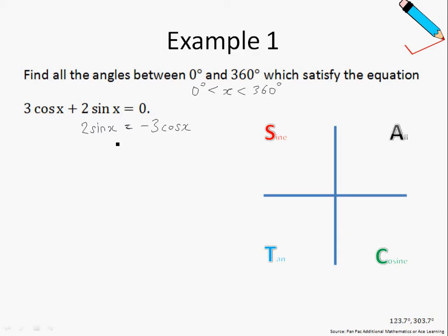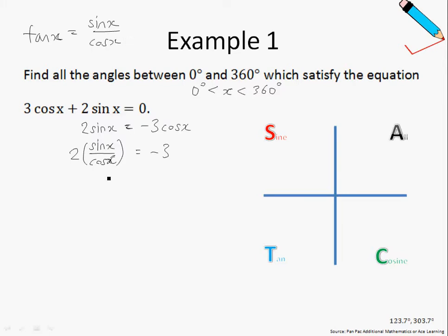Next, I will divide both sides by cos x. This leaves me with sin x over cos x on the left, and negative 3 on the right-hand side. Then I will divide both sides by 2. Recall that tan x equals sin x over cos x, so this simplifies to tan x = negative 3 over 2.